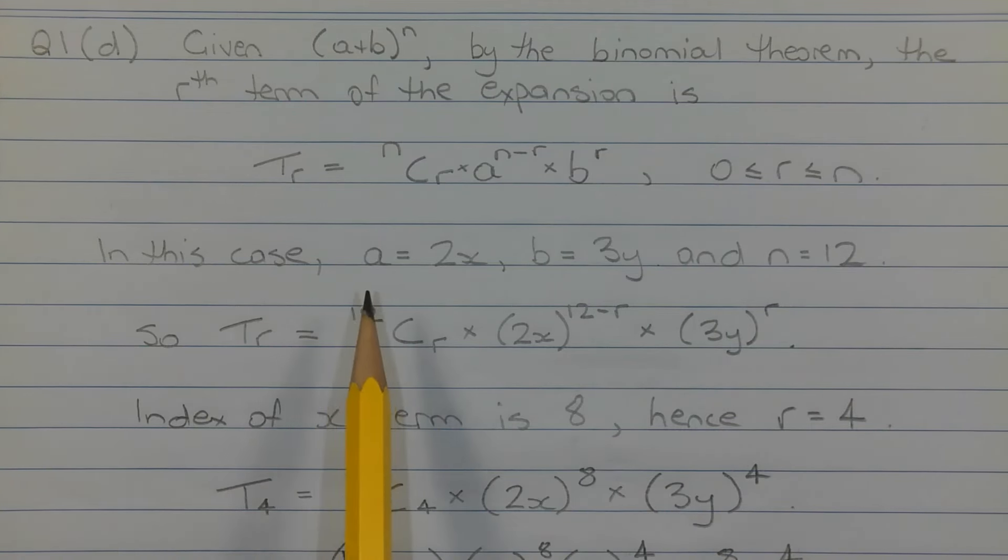In this case, a is equal to 2x, b is equal to 3y, and n is equal to 12. So tr is equal to 12 choose r times 2x in brackets to the power of 12 minus r times 3y in brackets to the power of r.